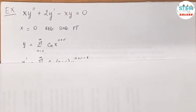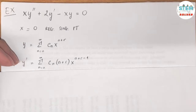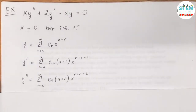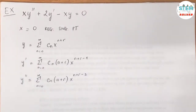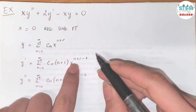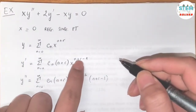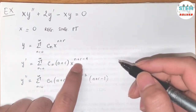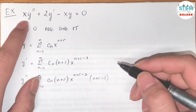Take the first derivative by bringing down the exponent and subtracting the exponent by 1. Then take the second derivative, giving a power series from 0 to infinity: c_n times (n plus r) times (n plus r minus 1) times x to the (n plus r minus 2). Again, bring down the exponent and subtract by 1.